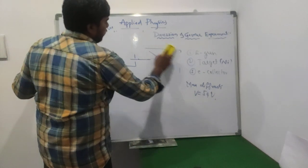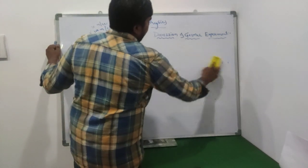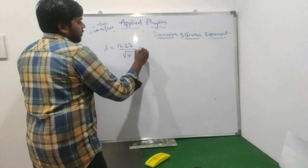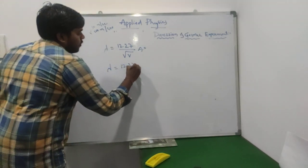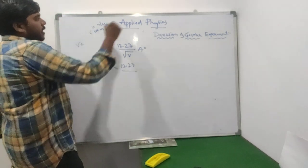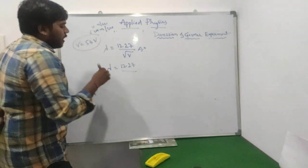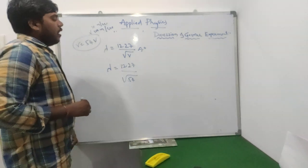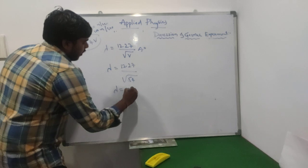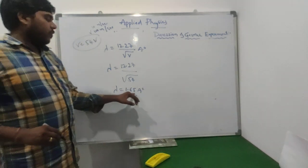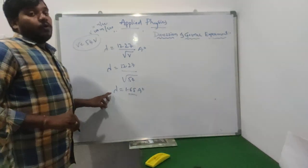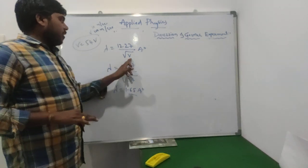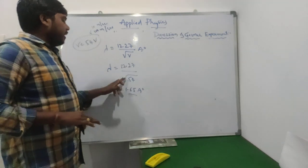To prove this is evidence for matter waves, we apply the de Broglie wavelength equation: λ = 12.27 / √V angstroms. Substituting V = 54 volts gives λ = 12.27 / √54 = 1.65 angstroms. This is the de Broglie wavelength obtained from the practical, experimental value.